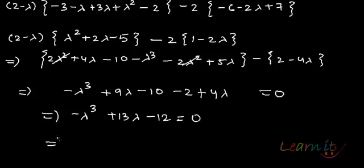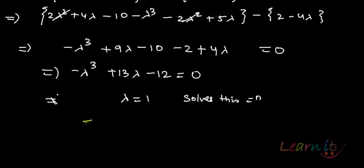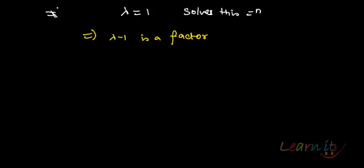So we have a cubic polynomial. To factor it, let's test the integer 1: minus 1 plus 13 minus 12 equals 0. So lambda equals 1 solves this equation, which means lambda minus 1 is a factor of this cubic. To find the remaining factor, we'll perform polynomial division.